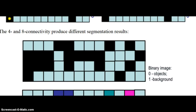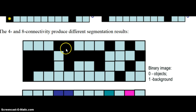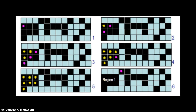In the second part, we're going to see the region growing process in action and how it works. Here's a basic image. The black pixels represent the objects in the image, and the bluish pixels represent the background. I'm going to walk you through the process of using the four-connectivity, the four neighborhood connectivity in this image.